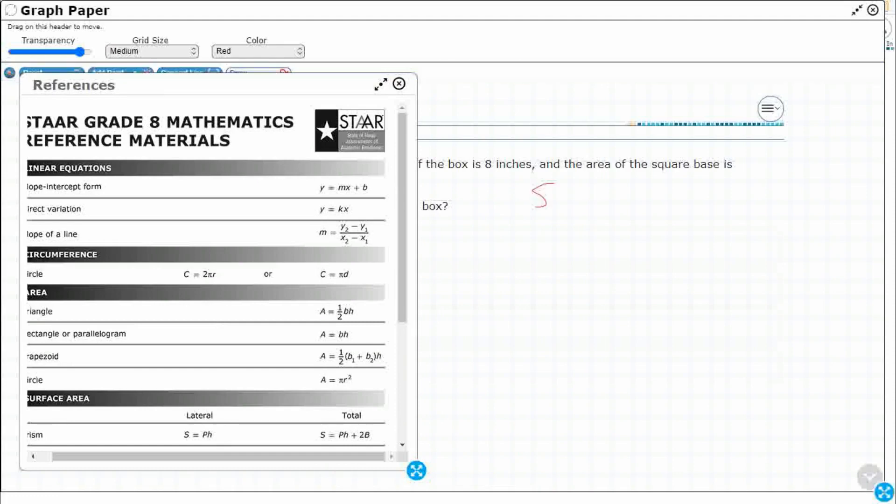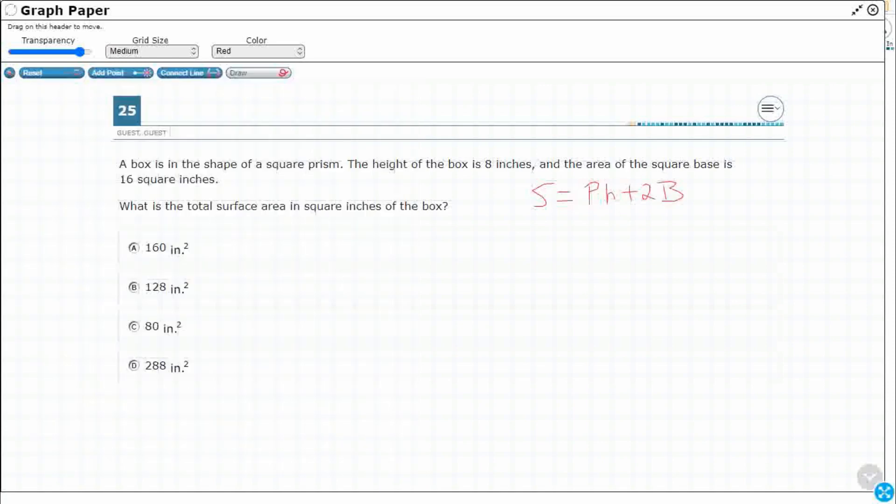So my surface area, first we need to find the correct formula, pH plus 2B. So that's all we need from our reference materials because it's got the prism and the total surface area. Now we just need to figure out what S and pH and 2B equals. The S is the surface area, so that's fine.